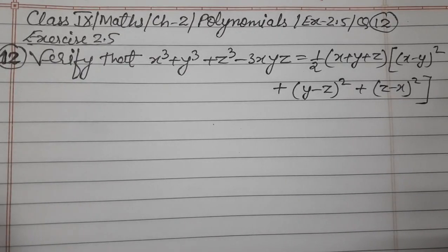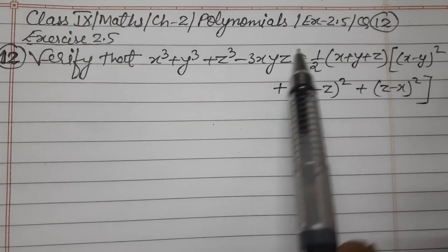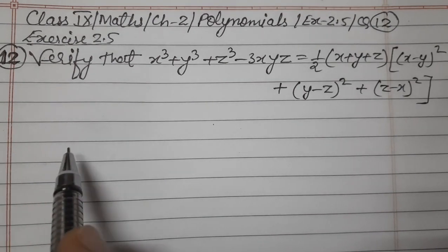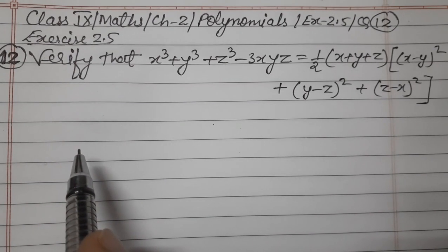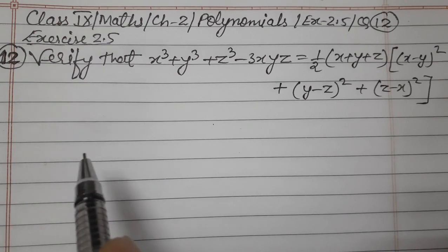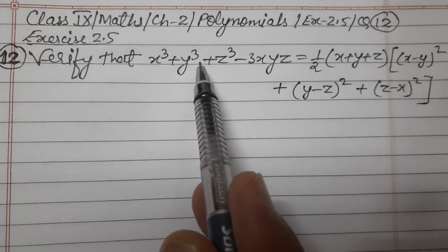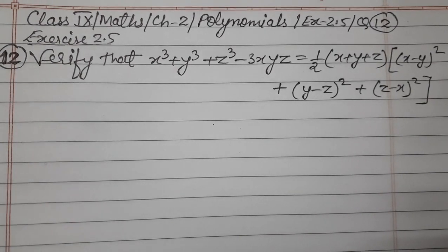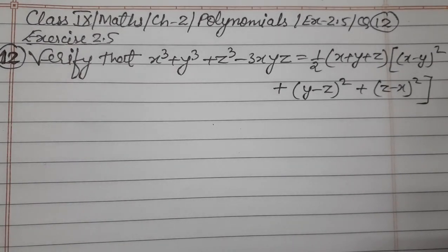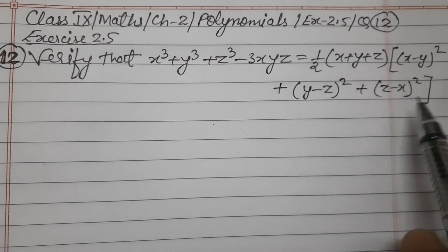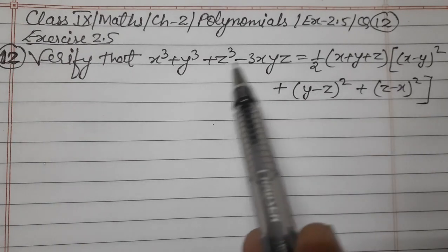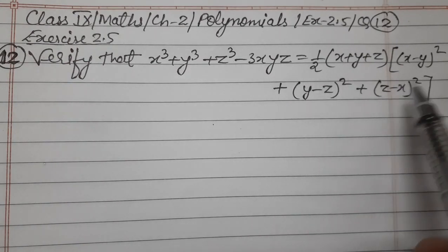Hello students, let's start question number 12, Exercise 2.5, Chapter 2 Polynomials. We were doing questions based on identities. Verify that x³ + y³ + z³ - 3xyz equals half of (x + y + z) times [(x - y)² + (y - z)² + (z - x)²]. We have to verify this identity, so let us start from the right hand side.